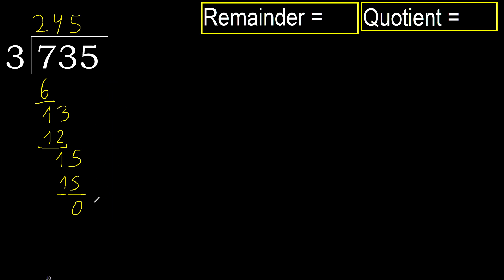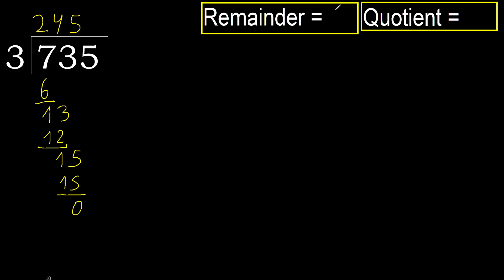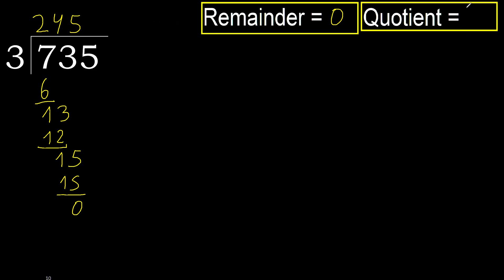There is no next number, therefore finish it. 735 divided by 3 is 245.